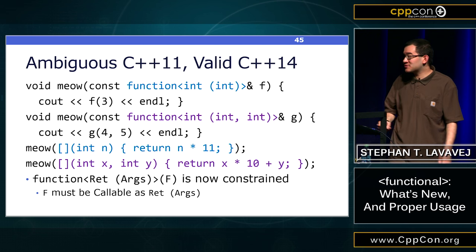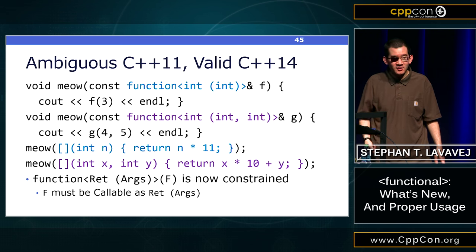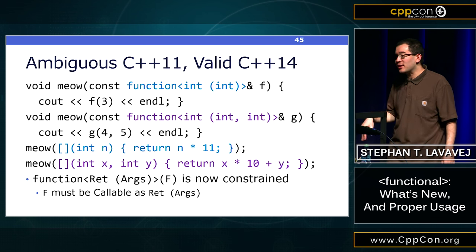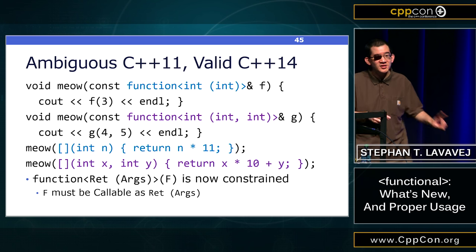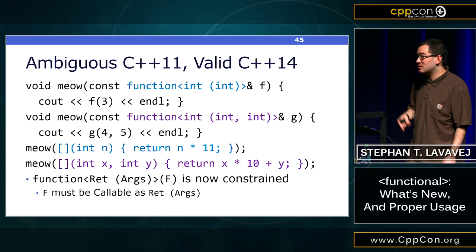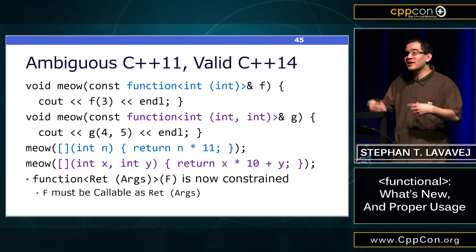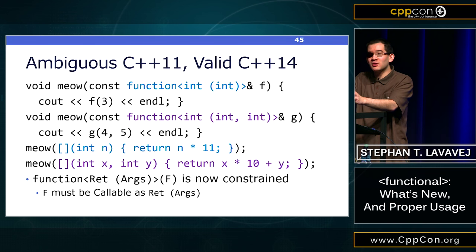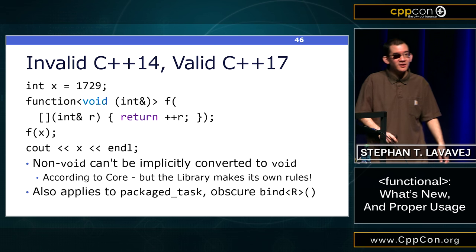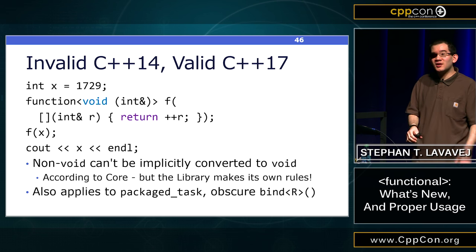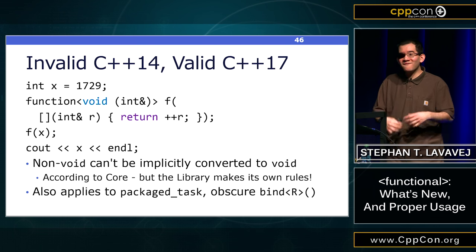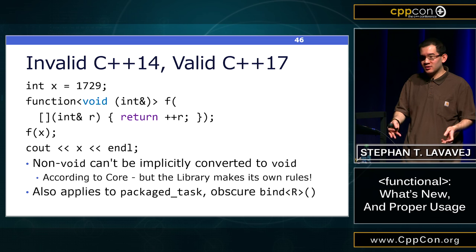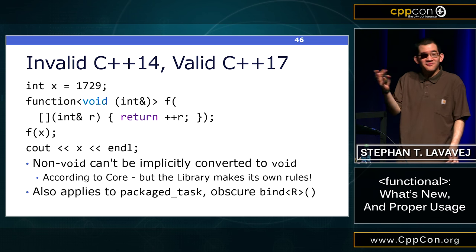Std::function learned a couple of tricks in C++14 and C++17. In C++11, overloading meow() to take a std::function<int(int)> and std::function<int(int,int)> and calling with differently-signatured lambdas was ambiguous and failed to compile. C++14 can disambiguate because std::function's constructor is now constrained to exist only if the callable object is callable with that signature. In C++17, if I have a std::function that returns void, I can now store a function object that returns something non-void — the return value will simply be discarded. The reason this didn't work in C++14 was that you can't implicitly convert something to void in the core language, but the standard library voted in a rule allowing it.